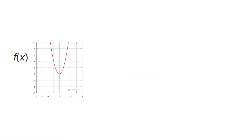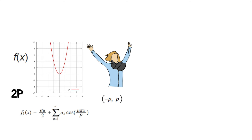Now, if f of x is an even function on open interval of minus p comma p, f of x can be expanded to an even periodic function with period 2p. The Fourier series expansion of such a function is given by f1 of x equals a naught upon 2